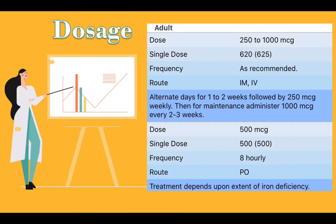The adult dose is 250 to 1000 micrograms. Single dose is 620. Frequency is as recommended. The route is IM or IV. Alternate days for 1 to 2 weeks, followed by 250 micrograms weekly. Then for maintenance, administer 1000 micrograms every 2 to 3 weeks.